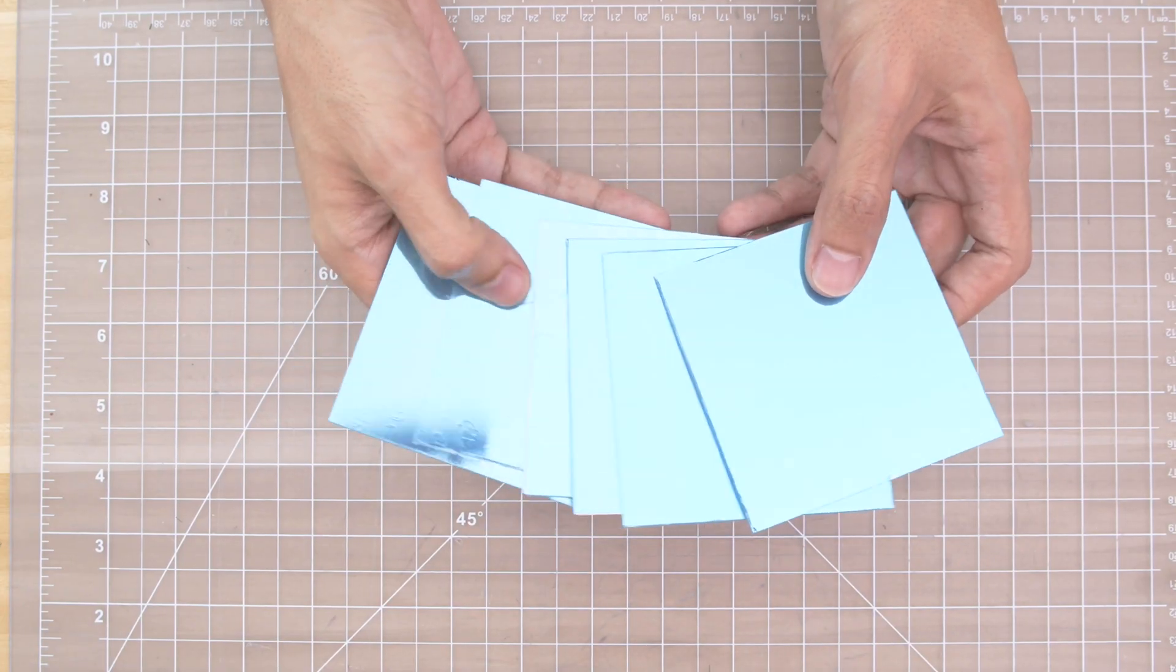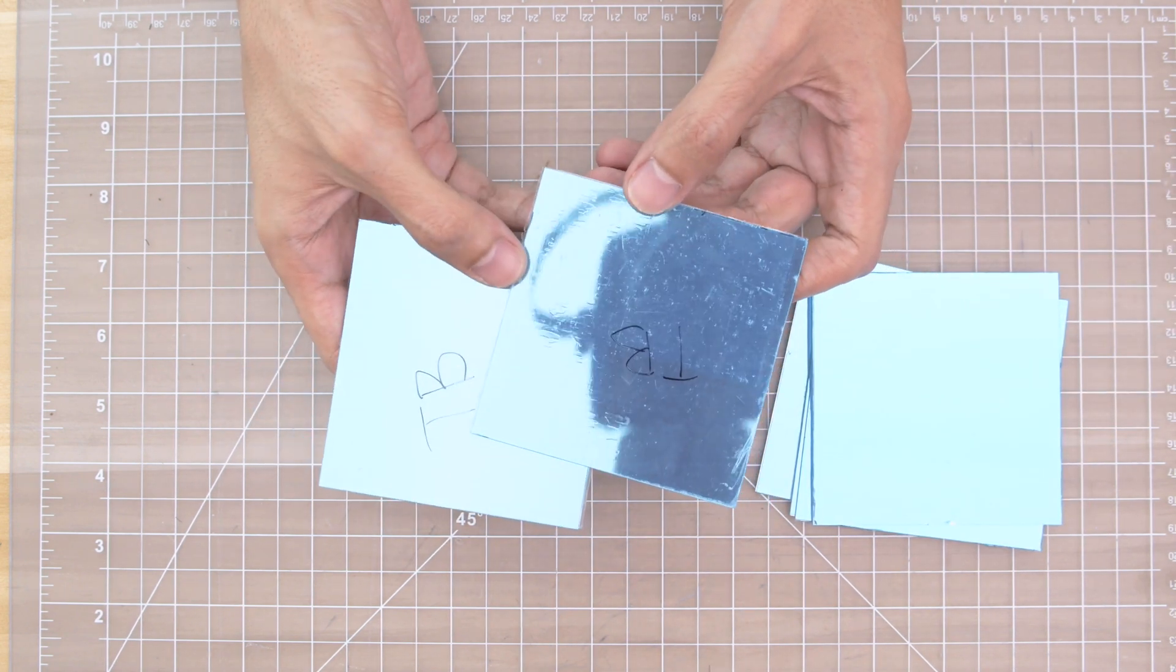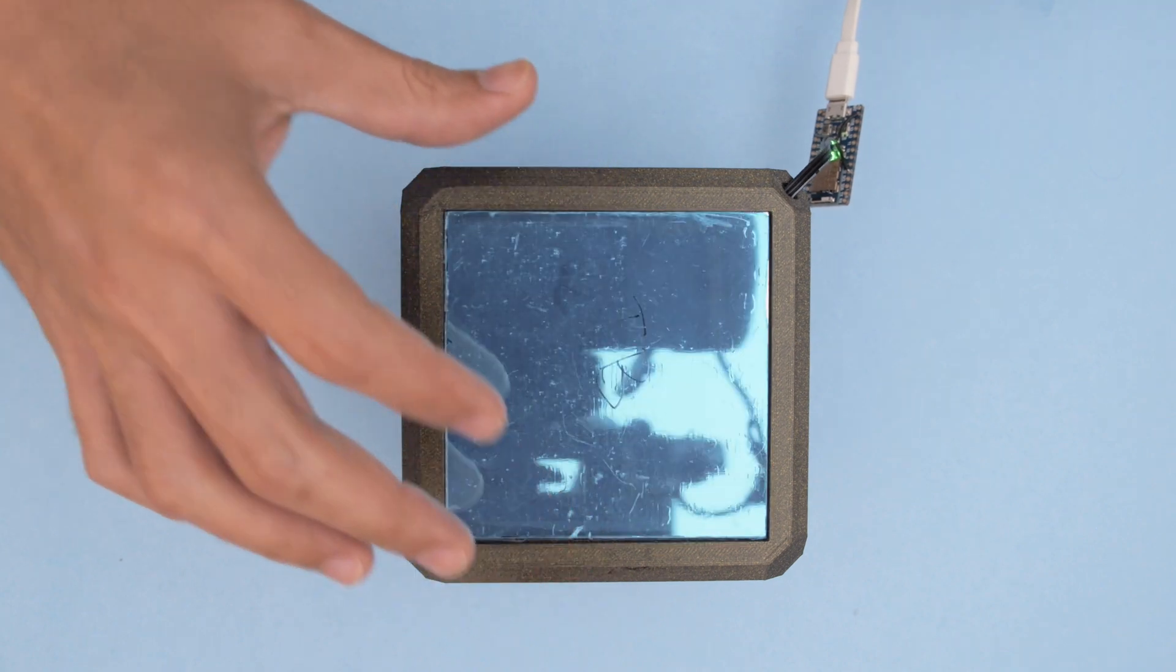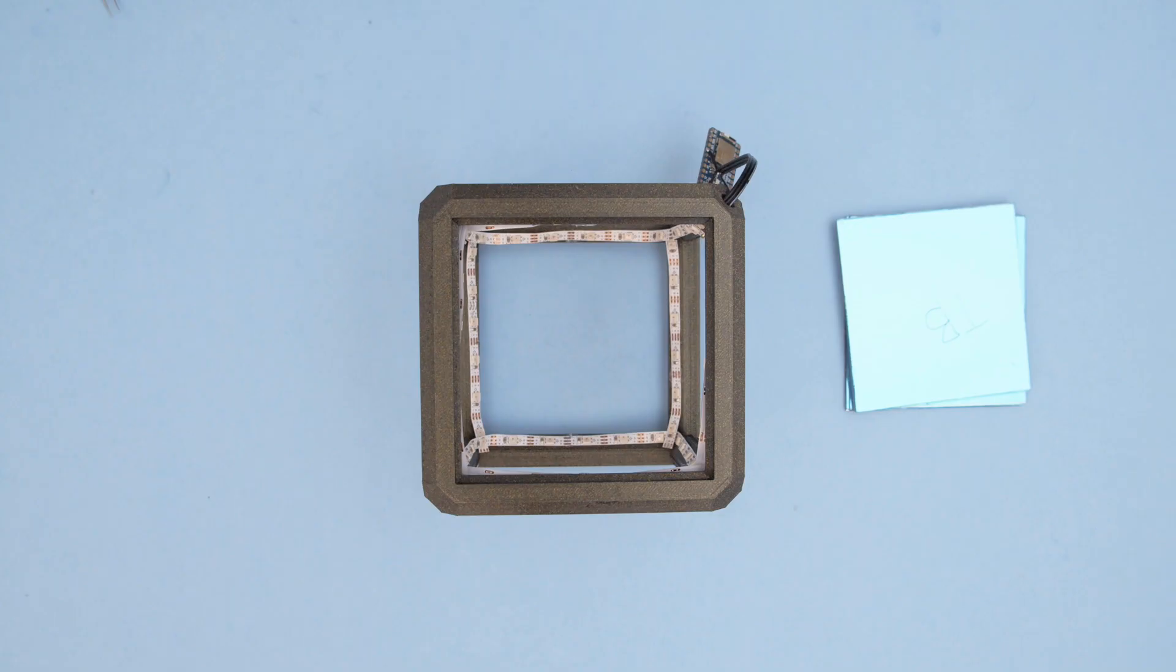Two of the six panels are cut slightly shorter to accommodate for the top and bottom of the cube. You'll want to test fit these out before gluing them in place. Once all the pieces have been test fitted you can then start to remove the protective layers.